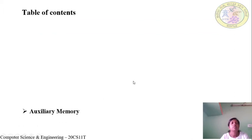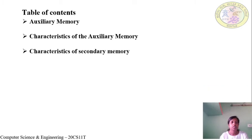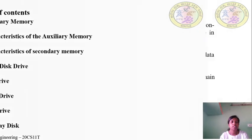We will see the table of contents: what is auxiliary memory, characteristics of auxiliary memory, characteristics of secondary memory, hard disk drive, CD drive, DVD drive, pen drive, and Blu-ray disc.